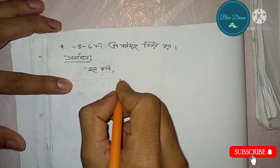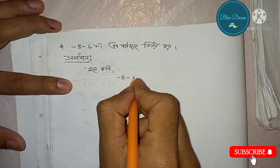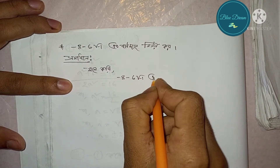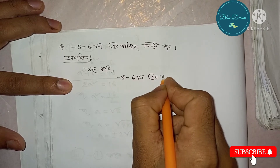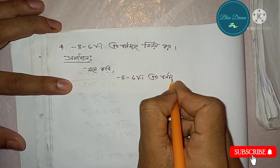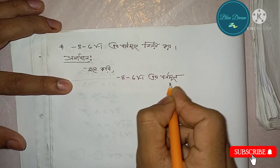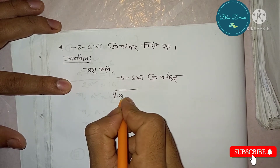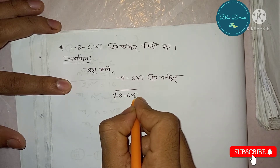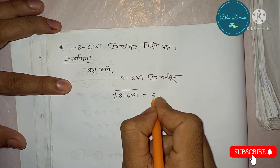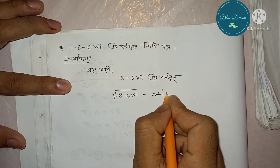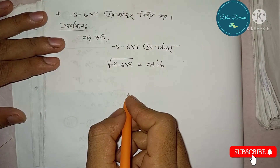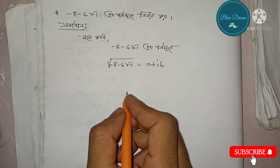We have: root over minus 8, minus 6, root over minus 1, is equal to a plus ib. So root over (minus 8 minus 6 root over minus 1) equals a plus ib.